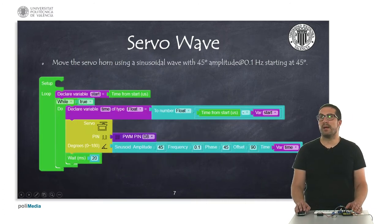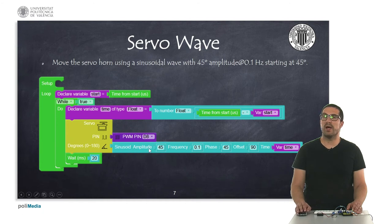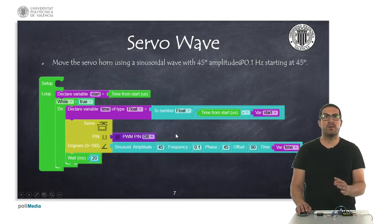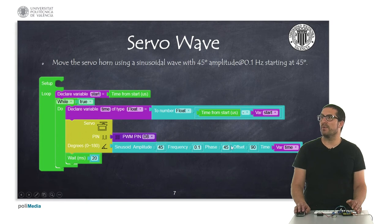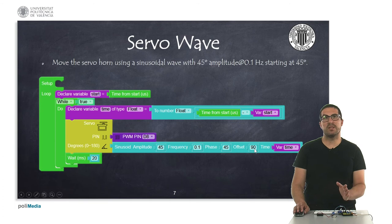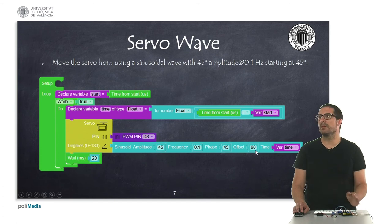And in this second example, what we have is a servo instruction that the angle position is controlled with a sinusoidal wave. So here, what I am doing is a 45 degrees amplitude at 1 hertz and it starts at 45 degrees and the center value is 90 degrees. So it's minus 45 and plus center or offset with the 90 degrees here.